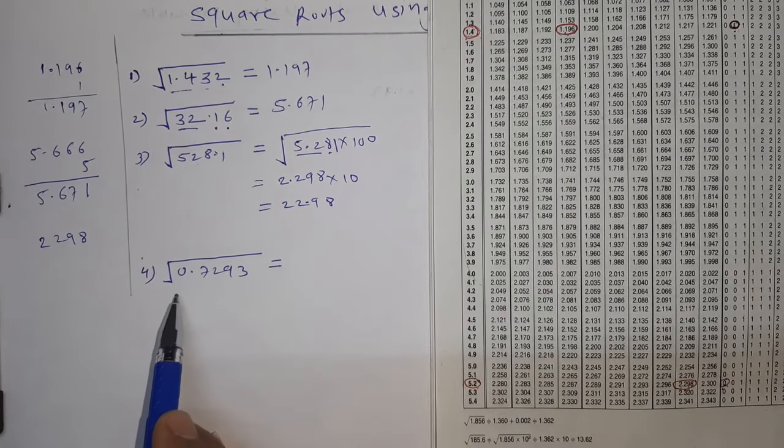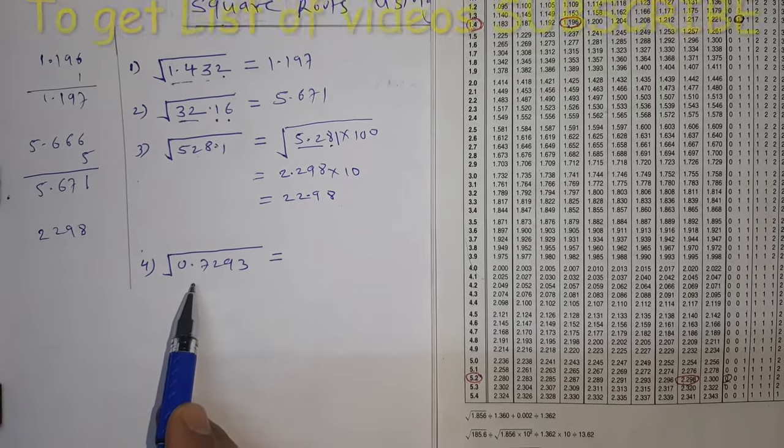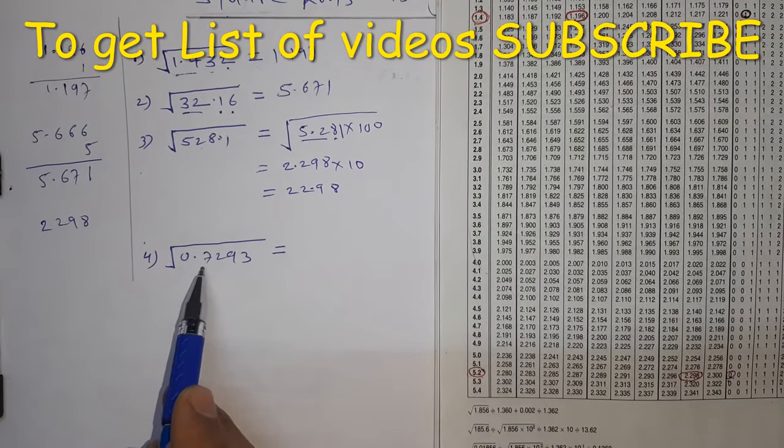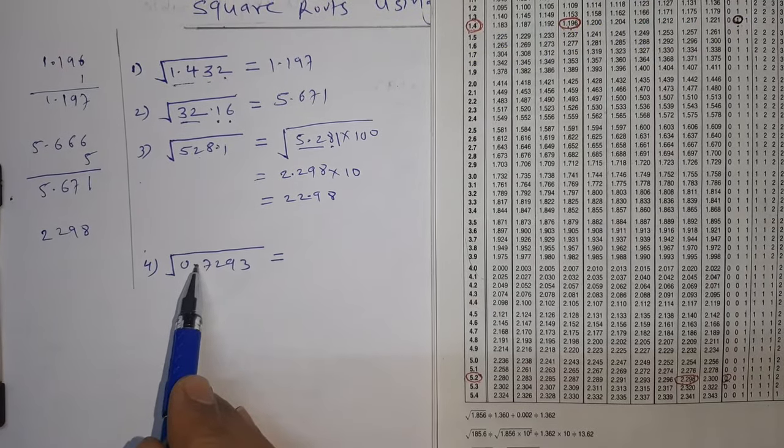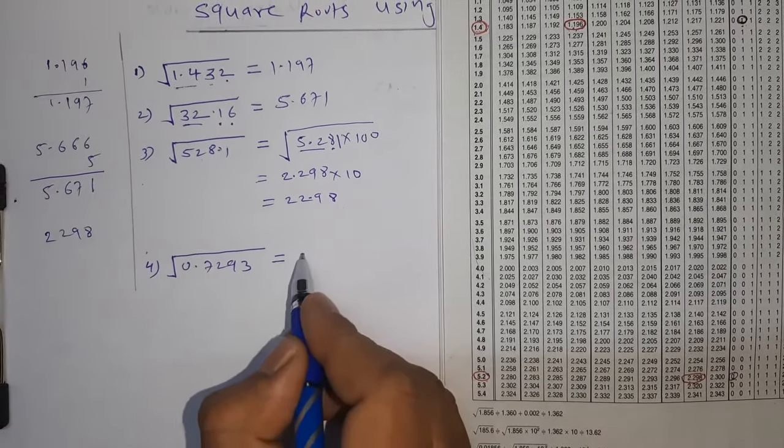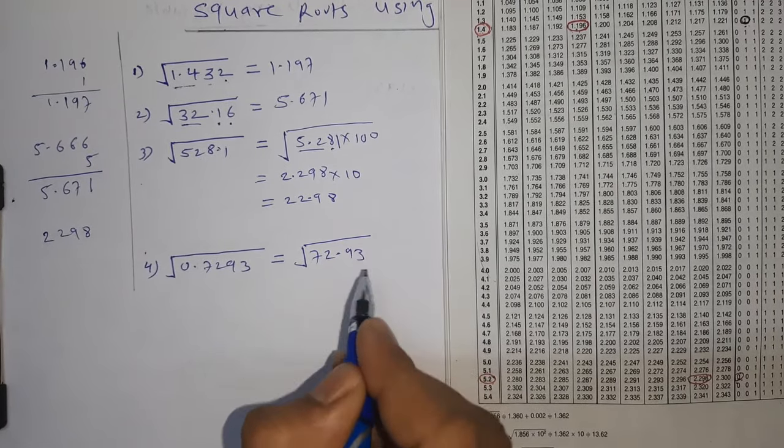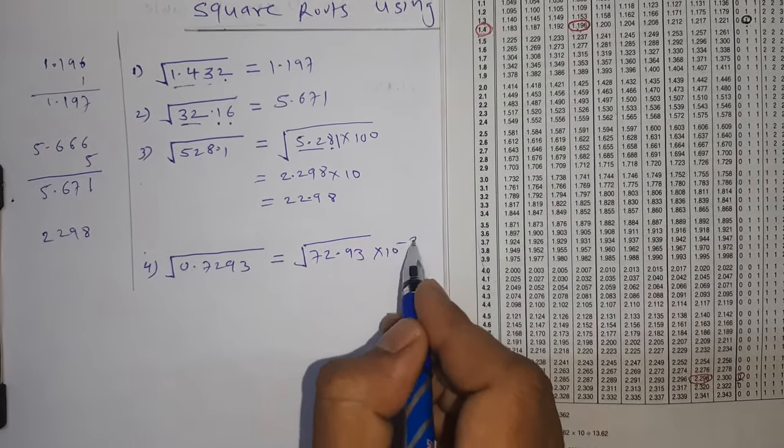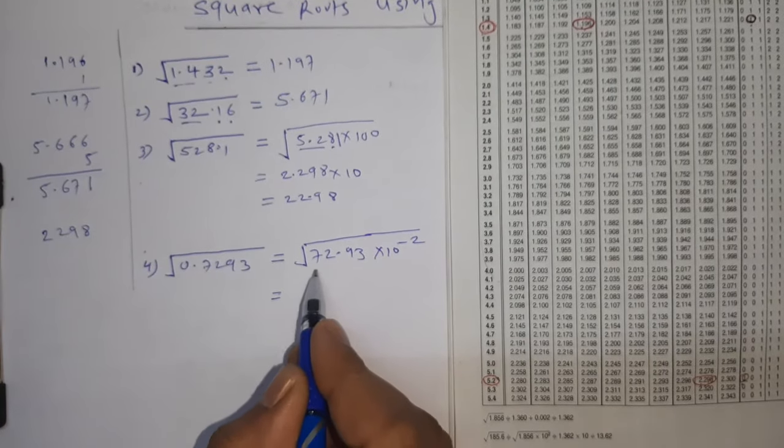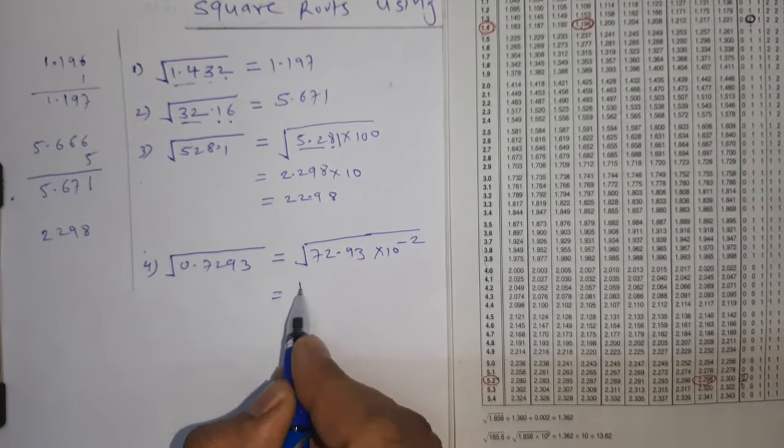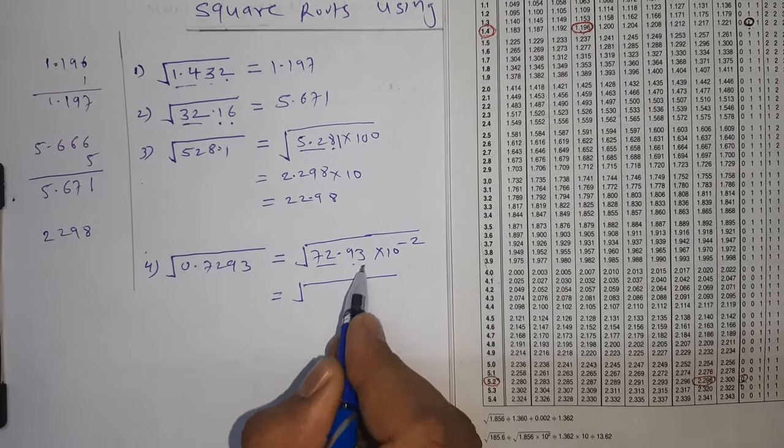Now suppose number is with decimal. We can see square root from 1 to 100. This is less than 1. Again shift the decimal, but we'll shift two decimals, that is in terms of 100. So I can write this as 72.93 times 10 raise to minus 2. Now first two digits 72, then 9, then 3.